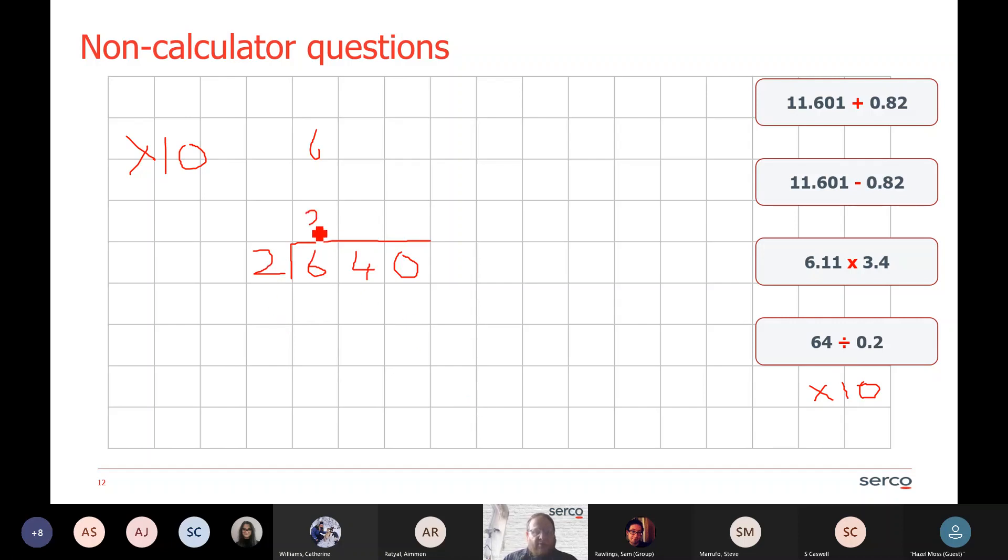This is the way I would write it to do long division or short division. I would do 2s into 6 go 3 times, 2s into 4 go twice, 2s into 0 go 0. So my answer is 320. I don't need to put the decimal point back in here because the ratio is still the same. Because I've multiplied both sides by 10, the ratio of 2 into 640 is exactly the same ratio as 0.2 into 64. So my answer remains 320. I've multiplied by 10, and I may have to multiply by 100 or 1,000, whatever it might be, to make sure that I'm not dividing by a decimal point.